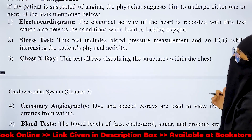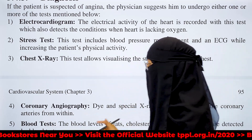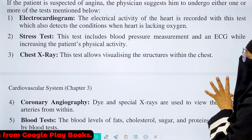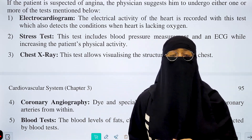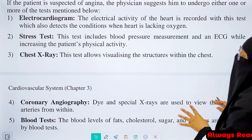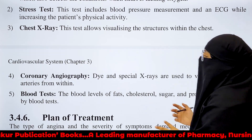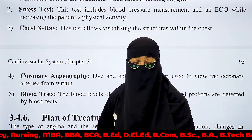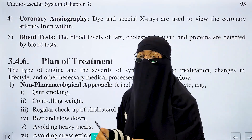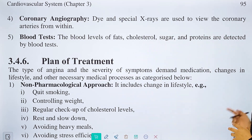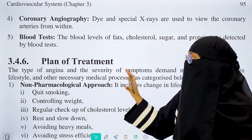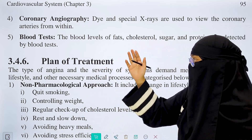To diagnose angina, several tests are used: ECG, stress tests, chest X-ray, coronary angiography, and blood tests. ECG measures the heart's electrical activity. The stress test measures blood pressure during exertion. Chest X-ray produces images of the heart to identify blockages. Coronary angiography uses a special dye with X-ray imaging. Blood tests measure fats, cholesterol, sugar, and protein levels, since cholesterol deposits in arteries are commonly associated with angina.